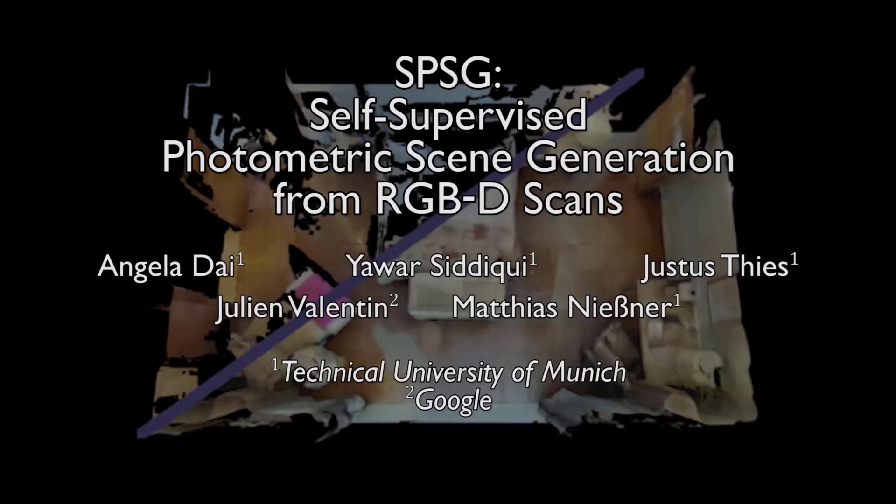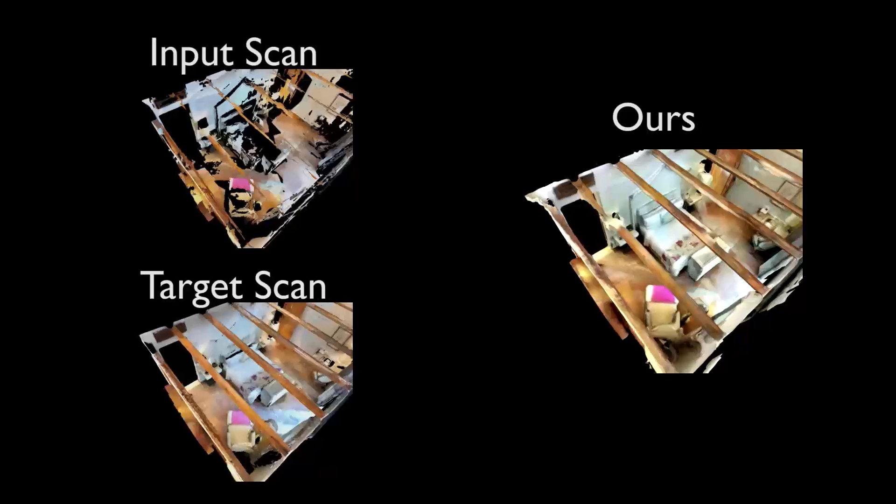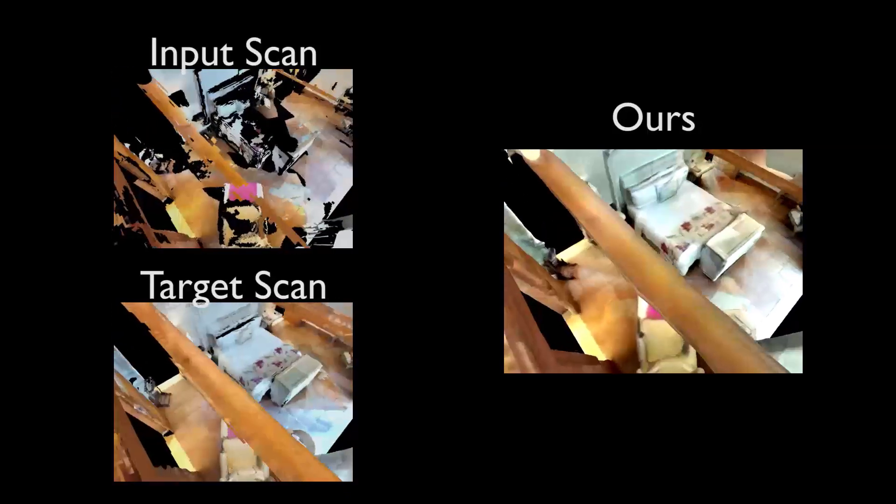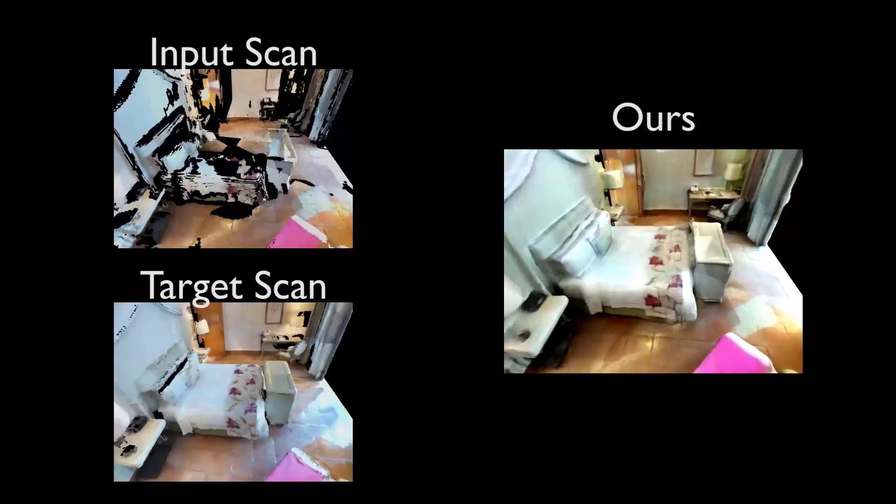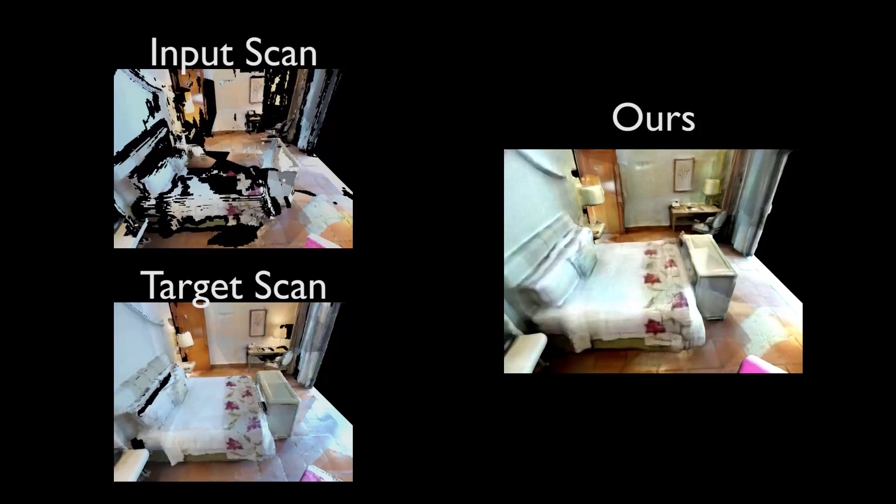We present SPSG, self-supervised photometric scene generation from RGBD scans. We generate high-quality colored 3D models of scenes from incomplete RGBD observations by learning to infer unobserved scene geometry and color in a self-supervised fashion.